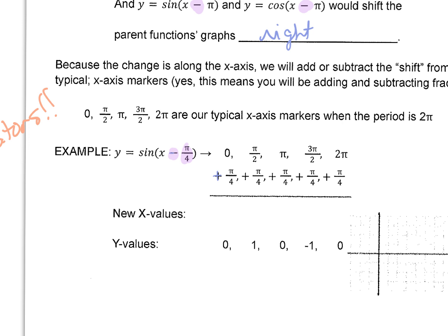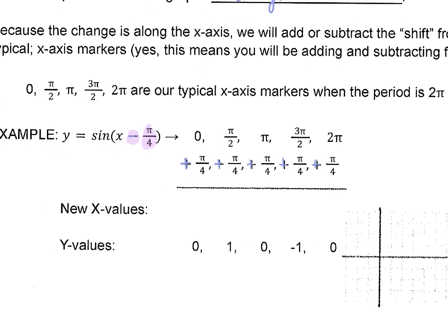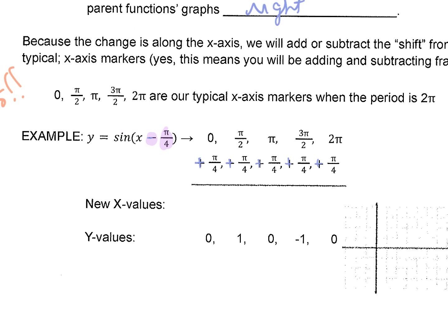So think about that again. We're seeing minus pi over 4. That means we are shifting right pi over 4, so that means we are going to have to add pi over 4 to each of our basic x-axis markers. We're going to have to find common denominator. So the first one is not so bad. 0 plus pi over 4, we know we get pi over 4.